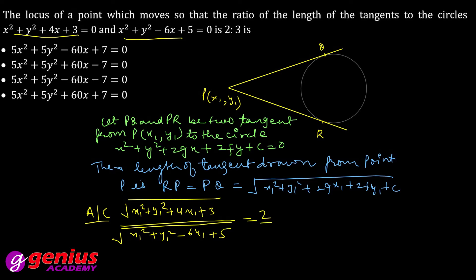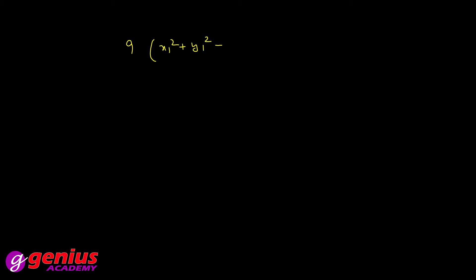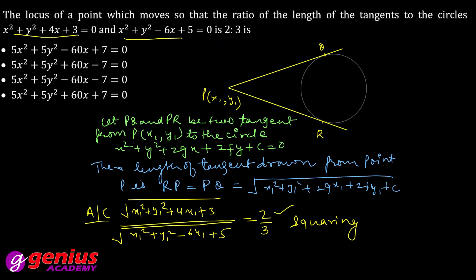The ratio is 2 by 3. If we do squaring on both sides, so that the square root gets cancelled, then we cross multiply as well. So 9 times (X1² + Y1² + 4X1 + 3) equals 4 times (X1² + Y1² − 6X1 + 5). After squaring, the ratio becomes 4 by 9, and terms shift to respective sides.